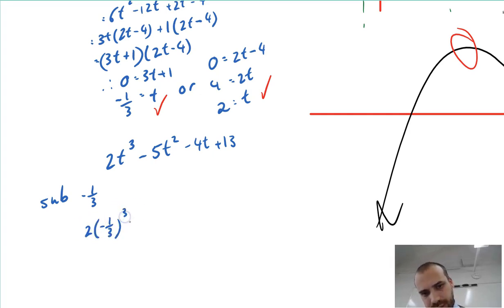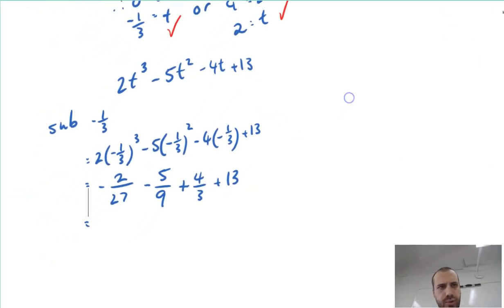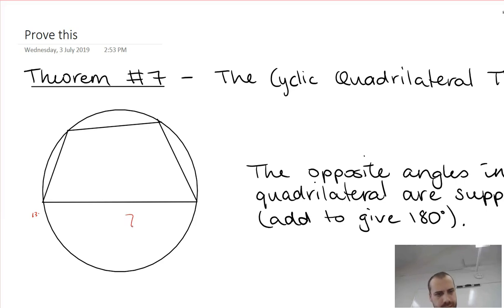2 times negative one third to the power 3 minus 5 times negative one third squared minus 4 times negative one third plus 13. Now that's going to be a number. So I get an answer of approximately 13.7.